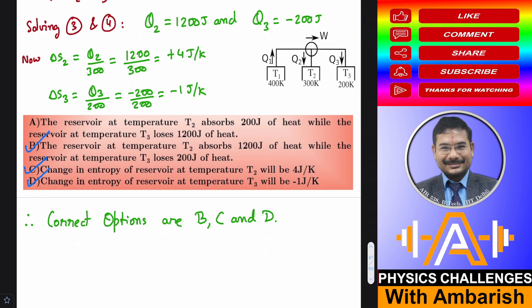This Q2 is 1200 joule. And this is the heat being absorbed by the reservoir. Right. So working fluid is rejecting this much heat. And reservoir is accepting this much of heat. So reservoir at T2 absorbs 1200 joule. This is right. While the reservoir at T3 loses 200 joule of heat.